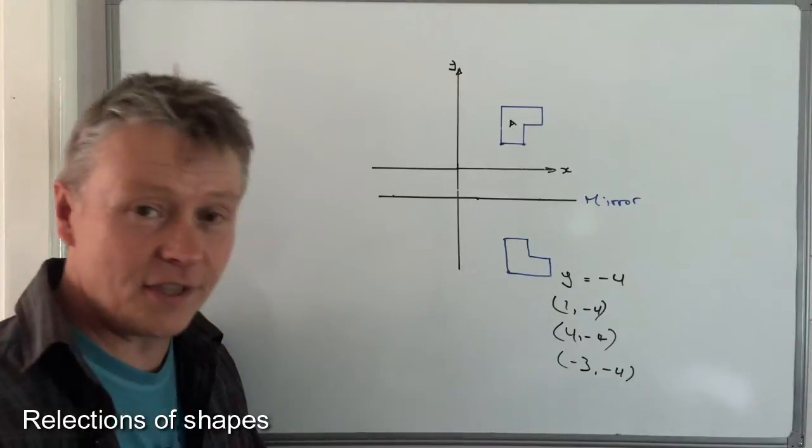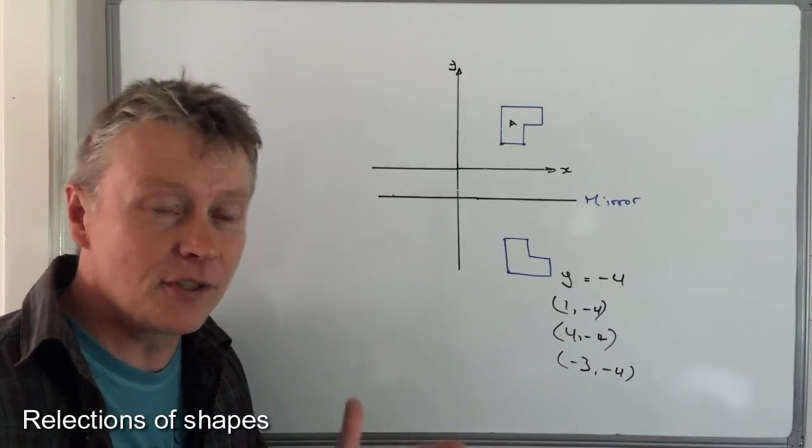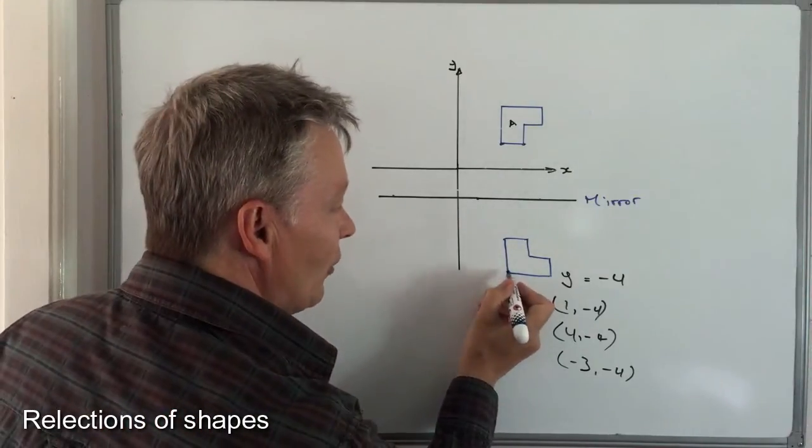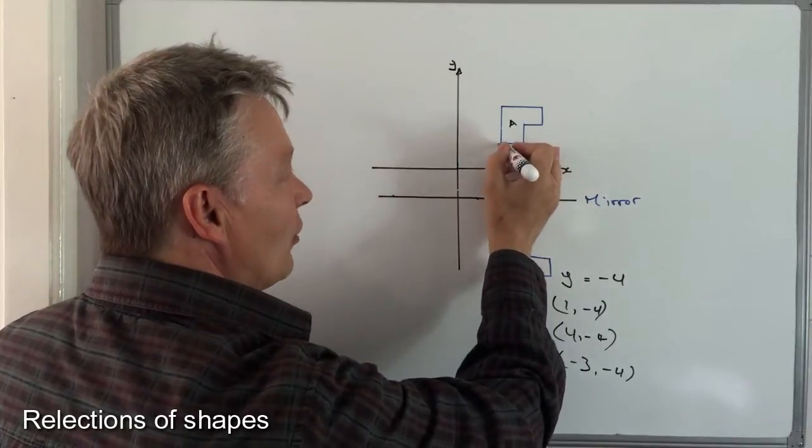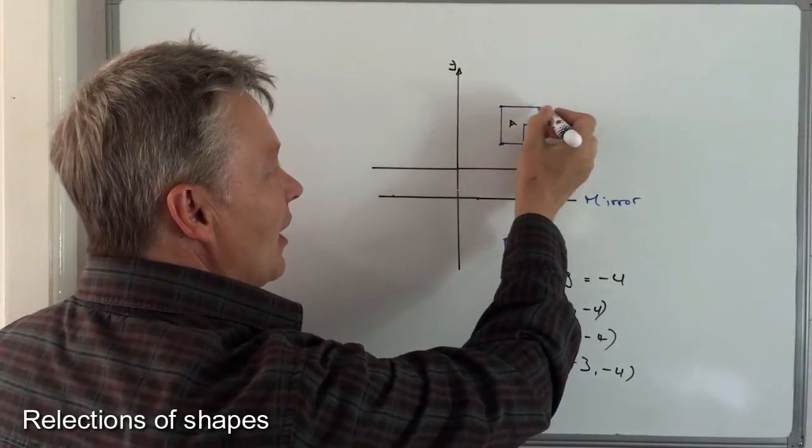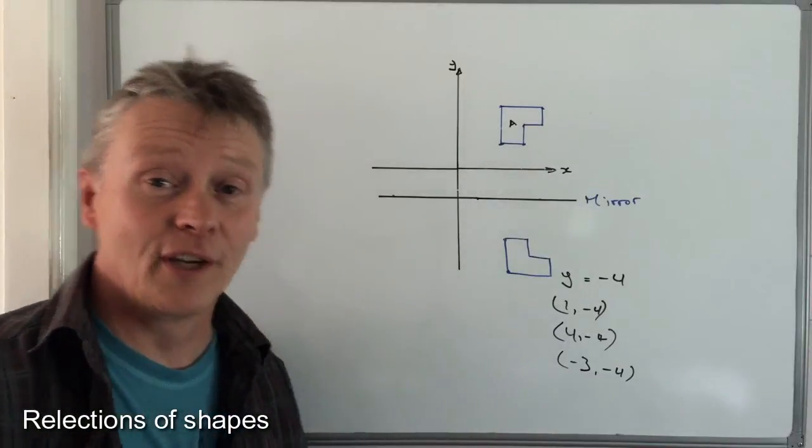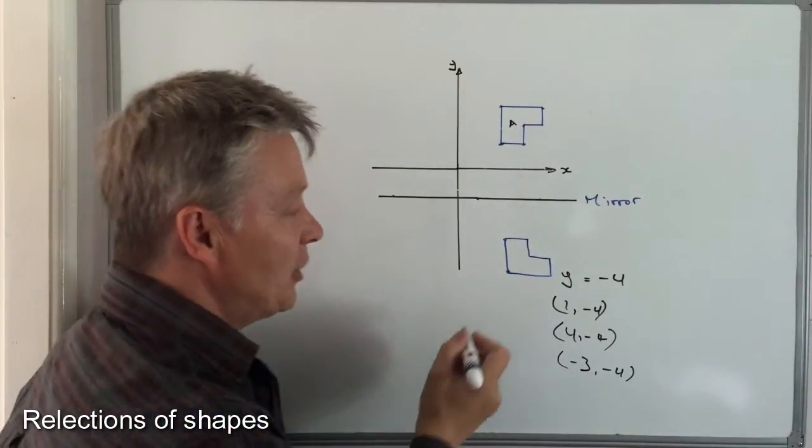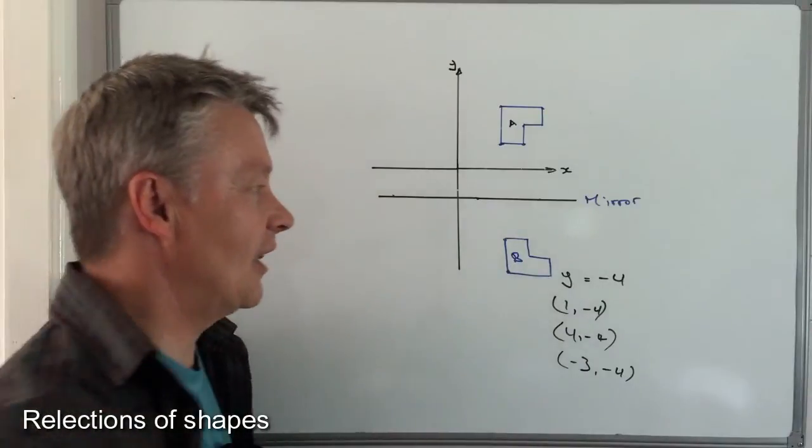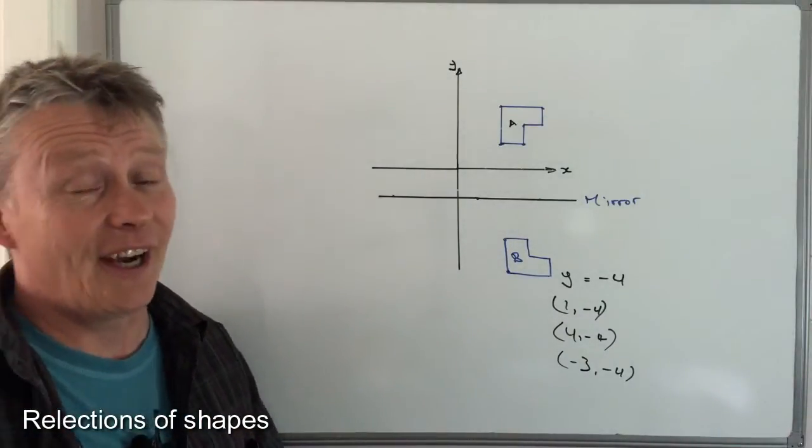And providing you plot it relatively accurately using that idea of just a point by point, so points there and then point there and point there, point there and point there, then it should work for you very well. And usually to finish the question, they'll say label it B or something like that.